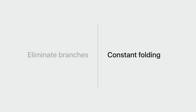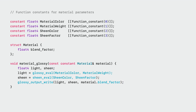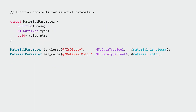Function specialization also helps with constants folding. Material parameters that don't change are replaced with constants. This example material uses a collection of input parameters from a Metal buffer. The parameters could be color, weight, sheen color, and many more. At material creation time, these static parameters can be replaced with function constants. Function constants produce the most optimal code with no buffer reads required. On the host side, function constant values are provided when creating a specialized pipeline state.